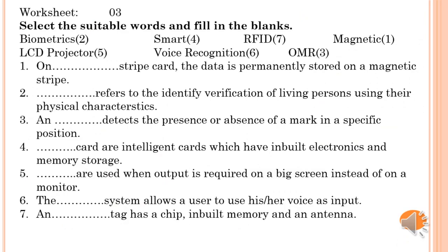Students, we have done worksheets one and two. Now we are going to start worksheet three, which is fill in the blanks. First question: on a magnetic strip card the data is permanently stored — answer is magnetic strip card. Second: biometric refers to the identity verification of a living person using their physical characteristics — answer is biometric device. Third: OMR detects the presence or absence of a mark in a specific position — answer is OMR, Optical Mark Reader.